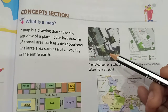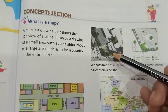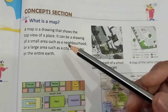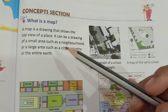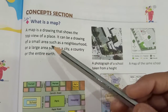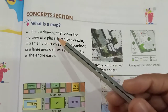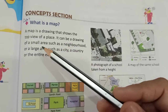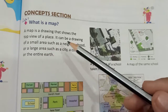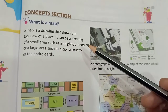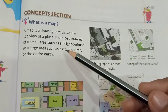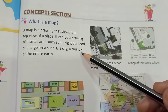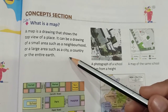Good morning dear students. Yesterday you had learnt about maps. A map is a drawing that shows the top view of a place. It can be a drawing of a small area such as a neighborhood, or a large area such as a city, a country, or the entire earth.